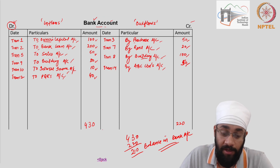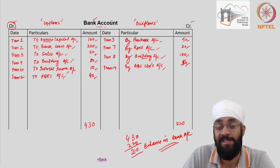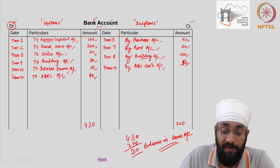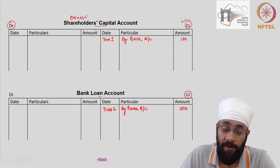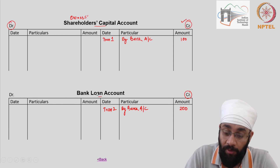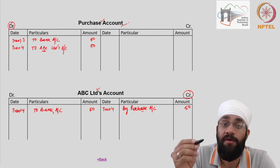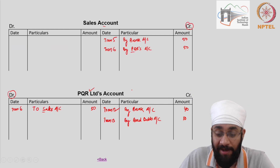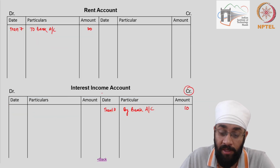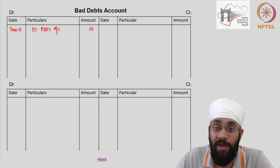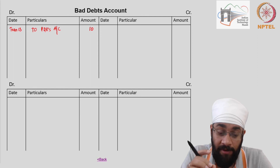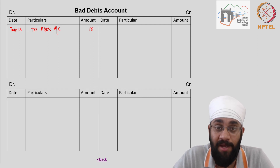In the beginning we said this process is about classifying transactions — and now see how they are being classified: all bank transactions here, all shareholder capital transactions here, all bank loan transactions here, all purchase-related transactions here, all transactions with ABC Limited here, and so on for all the rest of the accounts. I'm going to stop here and continue in the next video with more discussions on these accounts.